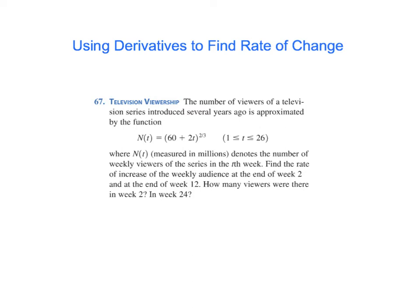A couple of things I want to point out here. This function N(t) tells us the number of viewers at a particular week, millions of viewers. If you want to know the rate of increase or the rate of change, then you need the derivative. So we're going to have to find N prime. When I go to attack this problem, I'm going to find the derivative first, and then I'm going to plug in 2 and 12 to answer the first part of the problem. Then I'll come back to the original function and plug in 2 and 24 to answer that part of the question.